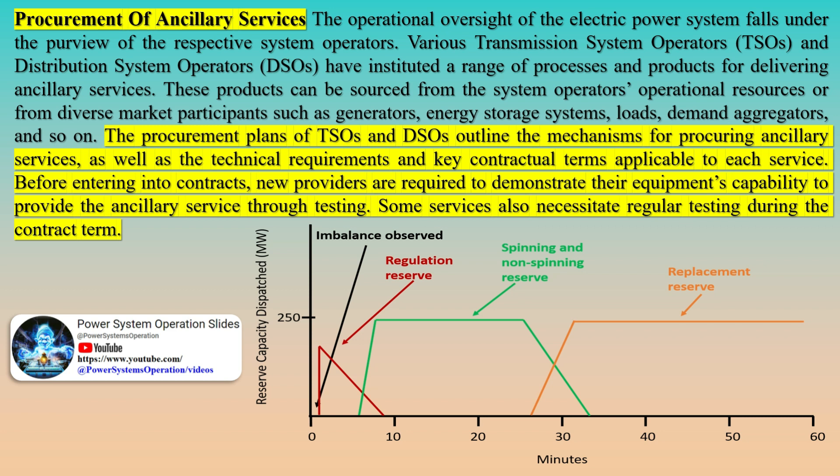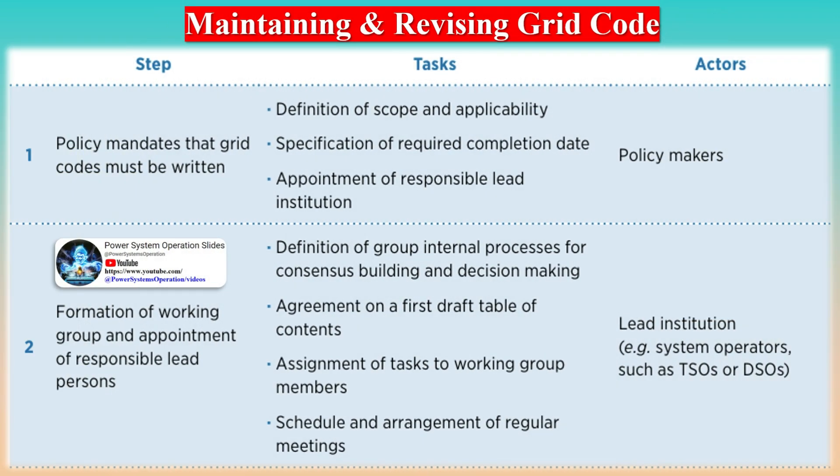Voltage support services are necessary to maintain the voltage of the electric power system within prescribed limits during normal operation and disturbances. This is achieved by balancing the generation and consumption of reactive power. The primary objectives of these services are voltage profile management and voltage stability maintenance. System restoration support services are required to restore the electric power system to normal operation following a blackout, and include black start and islanding operation.